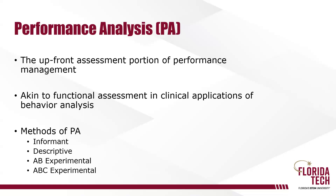Descriptive assessment involves directly observing the problematic or concerning performance and taking data on events surrounding that performance — so the antecedents and the consequences. AB experimental methods involve manipulating antecedents to the concerning performance. And ABC experimental methods involve manipulating both antecedents and consequences for the concerning performance.